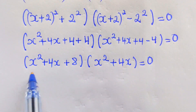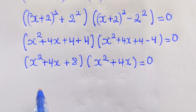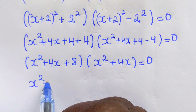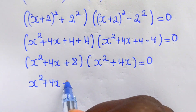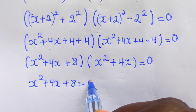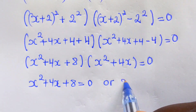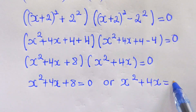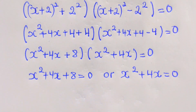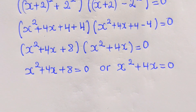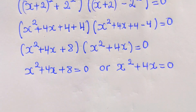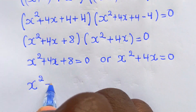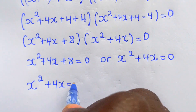We equate each factor to zero: so we have x squared plus 4x plus 8 equal to zero, or x squared plus 4x equal to zero.